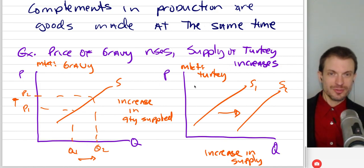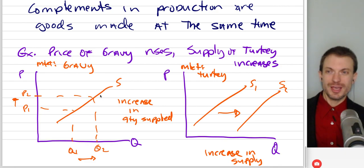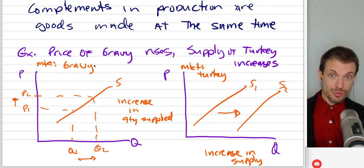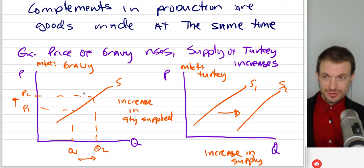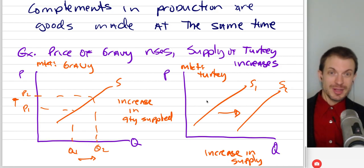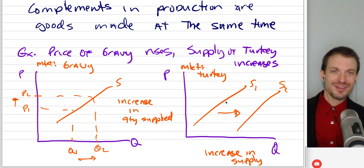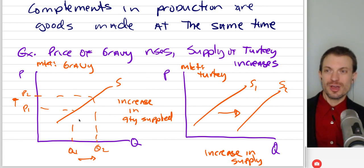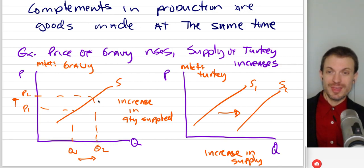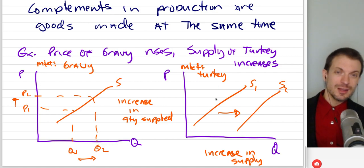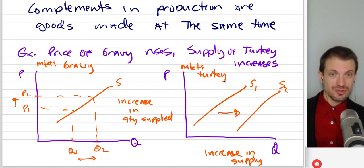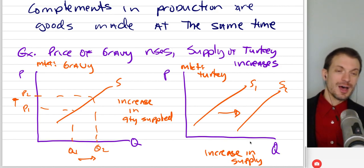Gravy is made as a byproduct of making turkey. So suppose the price of gravy rises: in the market for gravy, we get an increase in the quantity supplied of gravy — price increases can only change quantity, not supply. However, for the related market of turkey, if the price of gravy rises, I'm going to increase my supply of turkey because I'm going to make more gravy. So relative to the market for turkey, we get an increase in supply — a rightward shift.